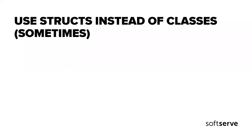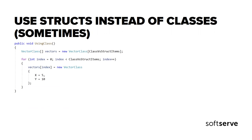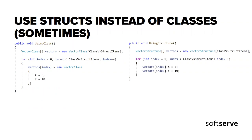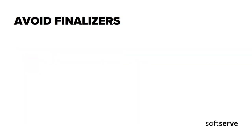We have a class and a struct of vectors, and two benchmark methods: one creating an array of classes and another creating an array of structs. For 1,000 items, the struct was quite faster than the class and its allocation was faster than class allocation. We can use structs when the following is true: the struct size is less than or equal to 16 bytes, the structs are short-lived, the struct is immutable, and the structs will not be boxed frequently.